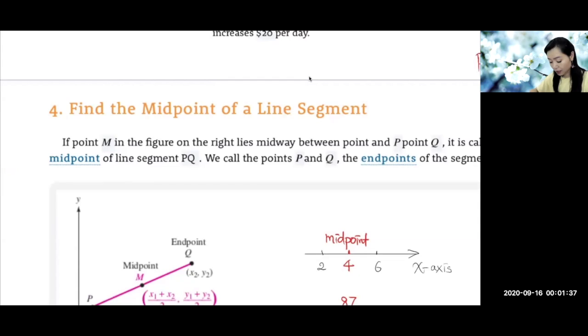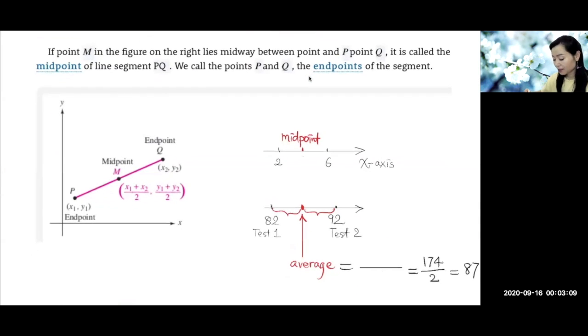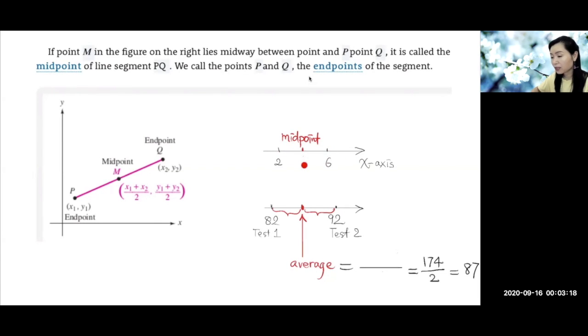Now we're going to continue with 2.1 and discover the midpoint formula. Let's consider the one-dimensional case. So this is the x-axis, with numbers 2 and 6. What's the middle point of 2 and 6? What's in the middle?